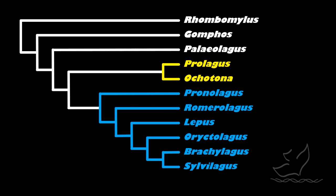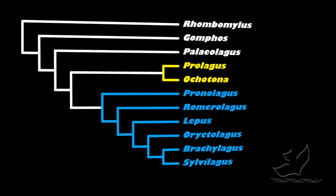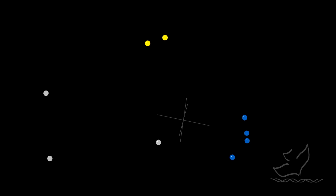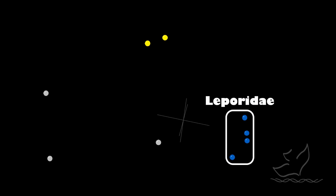So how would a creationist understand the origin of bunnies and how these things relate? I can take the data used to make the evolutionary tree and analyze it in a different way. In this diagram, the little dots represent the bunnies, pikas, or fossil forms, and how close they are together represents how similar they appear to be — how many characters they have in common. Down here in the bottom right, we have the bunnies, family Leporidae, forming a nice tight cluster. They're very similar, which makes sense because bunnies are bunnies.